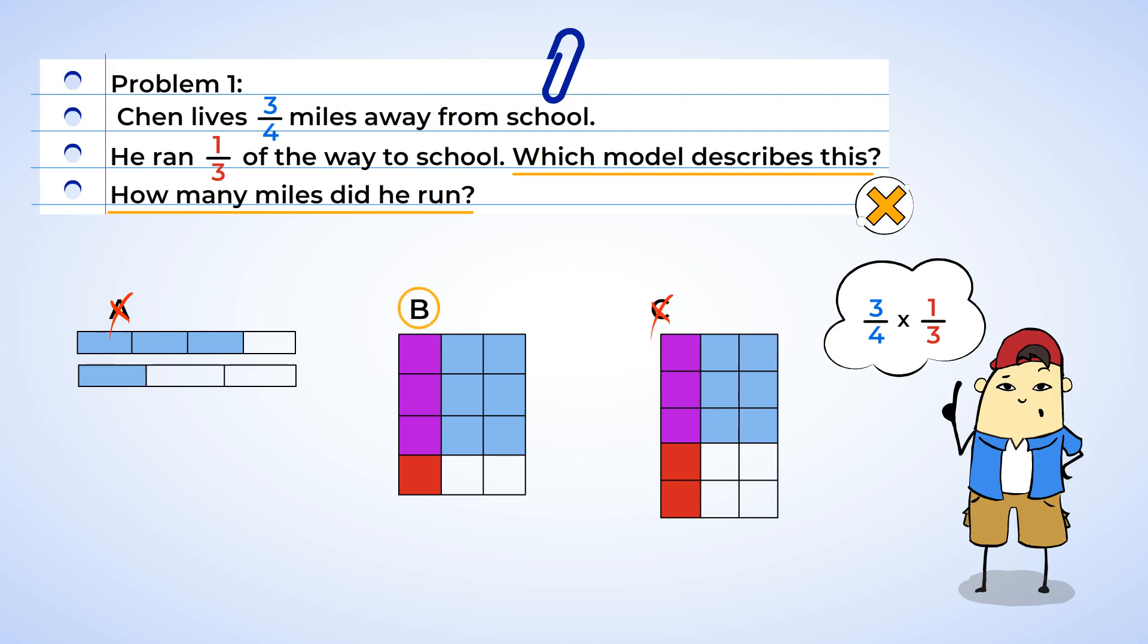Now let's double check model B just to be sure. There are three columns, and one of them is shaded red. So this represents one out of three, or one-third. And there are four rows, and three out of the four are shaded blue. And so that represents three-fourths. So this model is multiplying one-third by three-fourths.